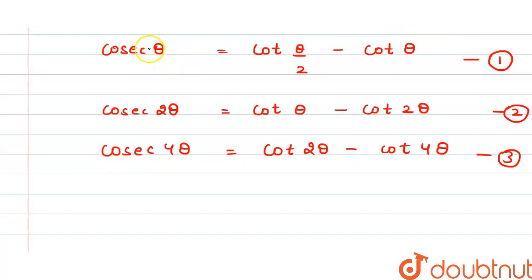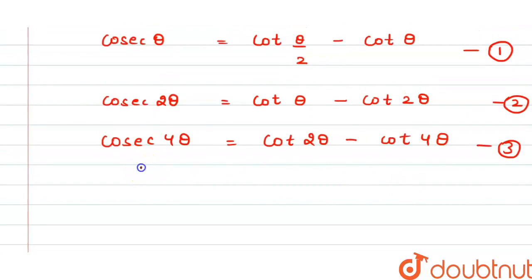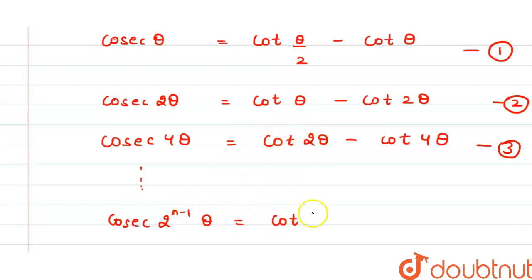If we observe, this is 2 raised to the power 0, this is 2 raised to the power 1, and this is 2 raised to the power 2. Now, if I write this relation for 2^(n−1), then cosec(2^(n−1)θ) = cot(2^(n−2)θ) − cot(2^(n−1)θ).